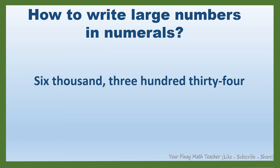How to write large numbers in numerals. First, identify the highest period. In this number, the highest period is thousands. It follows that we have two groups of digits, or two periods: the thousands and the ones period. The highest period may have three digits, two digits, or one digit. But the ones or the following period should have three digits.